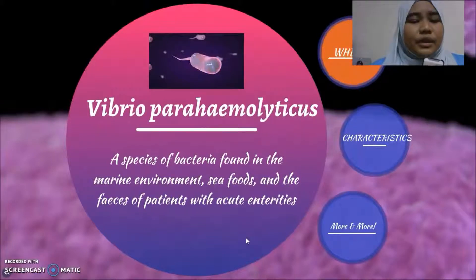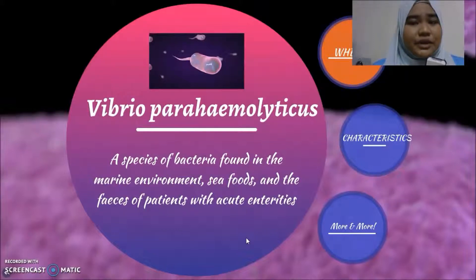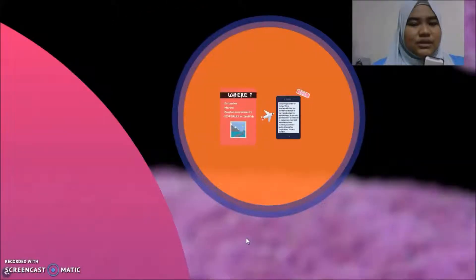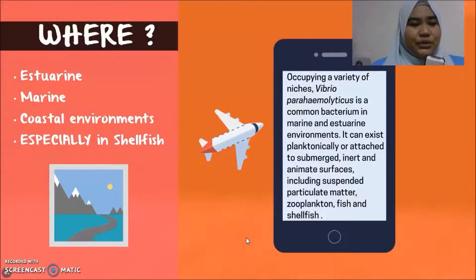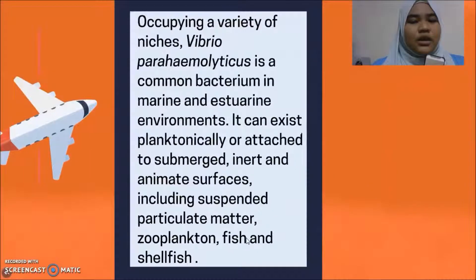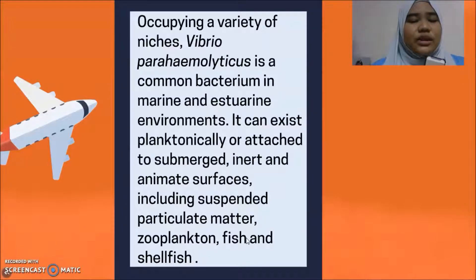For more information, Vibrio parahaemolyticus is a species of bacteria found in the marine environment, seafoods, and the feces of patients with acute enteritis. It can be found in estuarine, marine, and coastal environments, especially in shellfish. Occupying a variety of niches, Vibrio parahaemolyticus is a common bacterium in marine and estuarine environments. It can exist planktonically or attached to submerged inert and animate surfaces, including suspended particulate matter, zooplankton, fish, and shellfish.